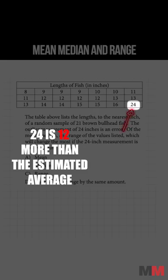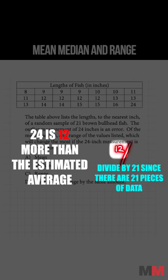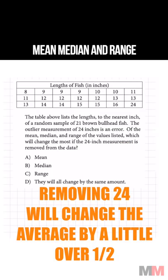This number 24 raised the average by 12 divided by 21. So taking out 24 is going to change your average by a little over 0.5.